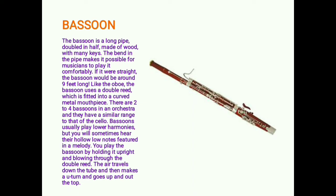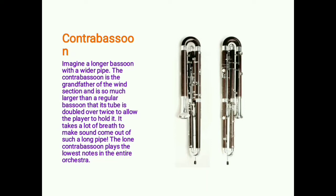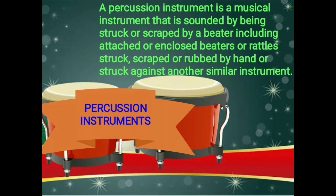Bassoons usually play lower harmonies, but their hollow low notes are sometimes featured in a melody. You play the bassoon by holding it upright and blowing through the double reed; the air travels down the tube, makes a U-turn, and goes up and out the top. The contrabassoon is like a longer bassoon with a wider pipe — the grandfather of the wind section. It is so much larger than a regular bassoon that its tube is doubled over twice. It takes a lot of breath to produce sound from such a long pipe. The lone contrabassoon plays the lowest notes in the entire orchestra.